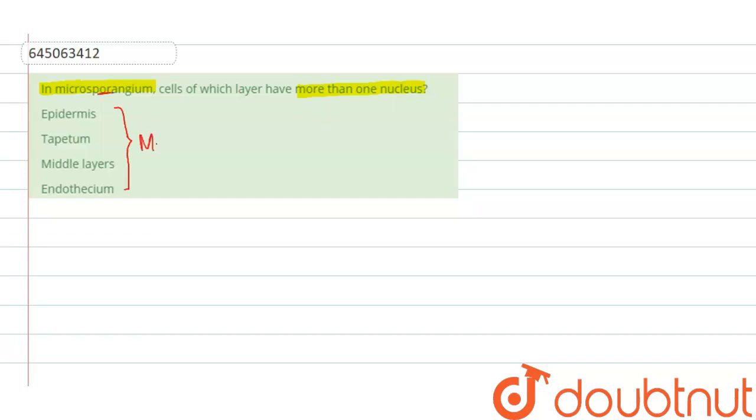All of these belong to the microsporangium. This microsporangium is typically circular in outline and consists of four wall layers.